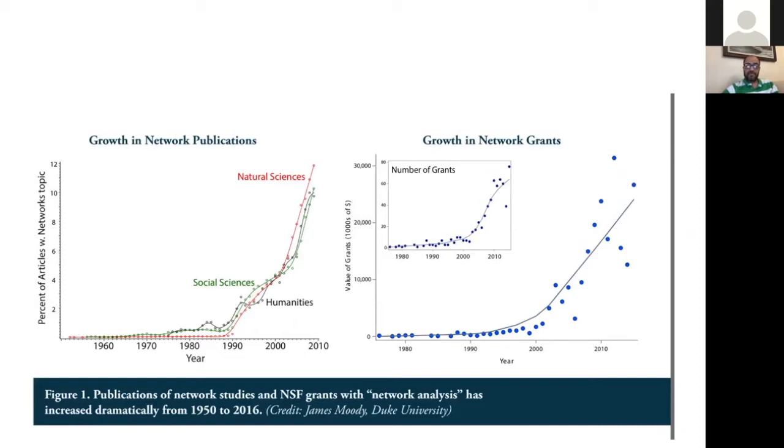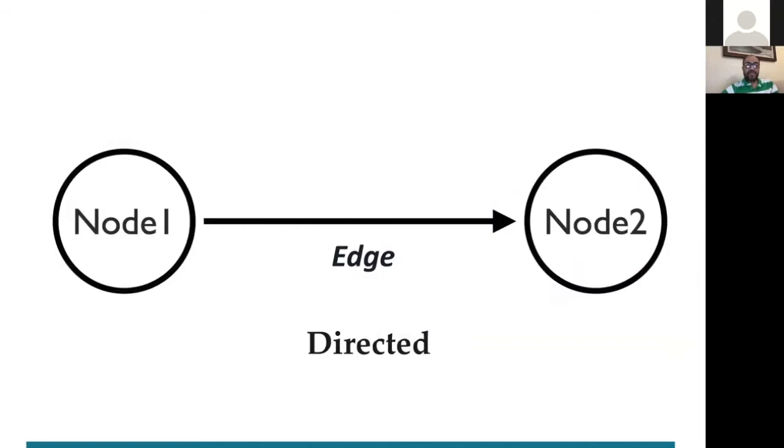So a network is simply composed of building units. The building unit is an edge, which is composed of a node or an actor or a person or a human or an element or an entity connected to another entity. We call this, for example, node one connected to node two, and they are connected through an edge. That could be, for example, a colleague working with a colleague, an article to an article, a city connected to a city by an airport.